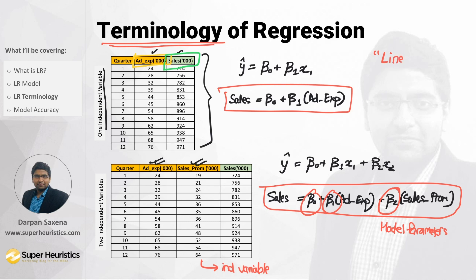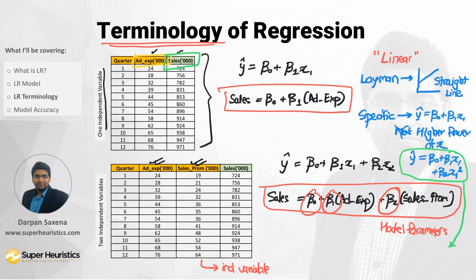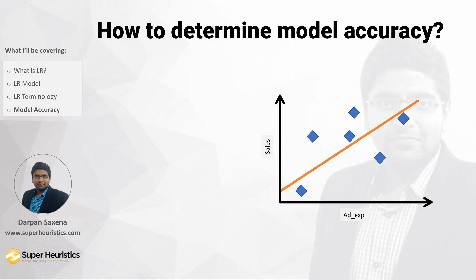Why do we call it 'linear'? The simple answer is that the line is a straight line. More specifically, in the equation ŷ = β₀ + β₁x₁ we are not using any higher powers of x. If the equation were ŷ = β₀ + x₁ + β₂x₁² it would no longer be a linear model. When we have x², x³, or x⁴ in the equation, that kind of model is called polynomial regression, which will be covered in future videos.